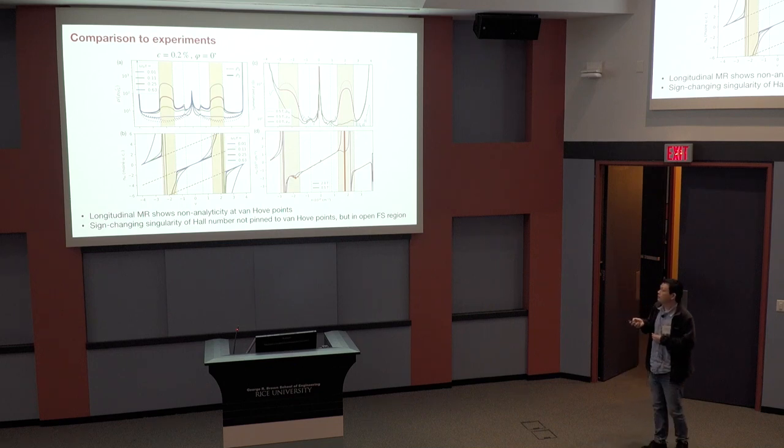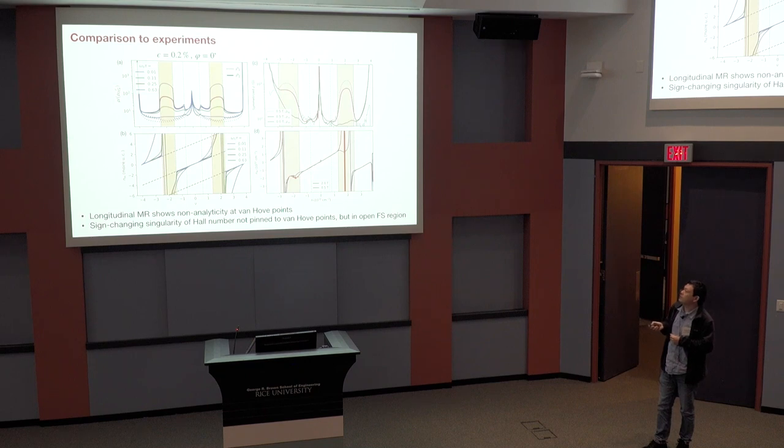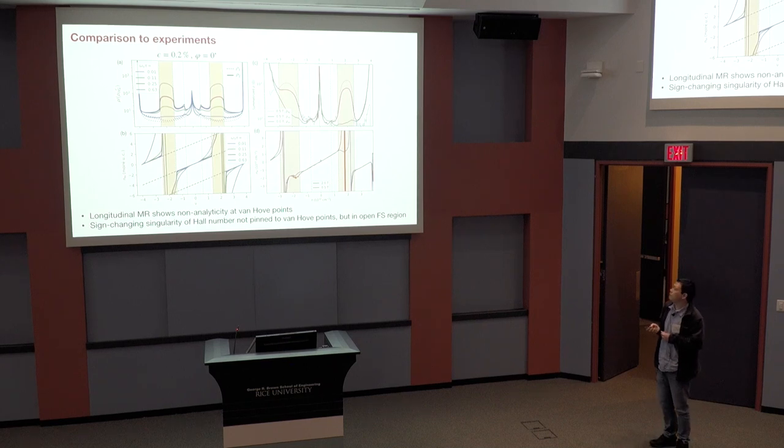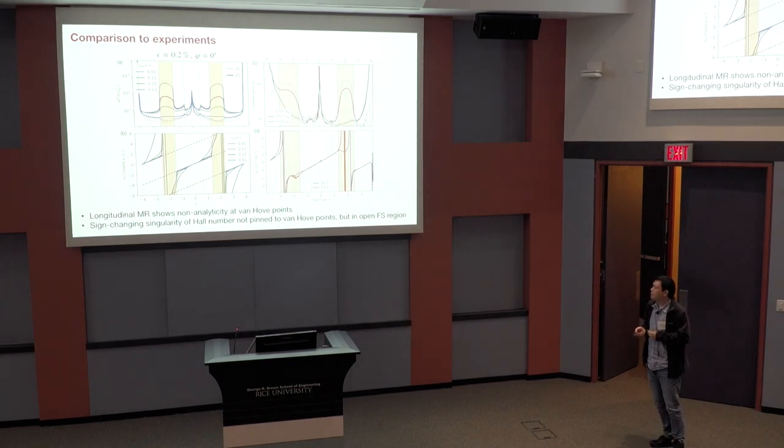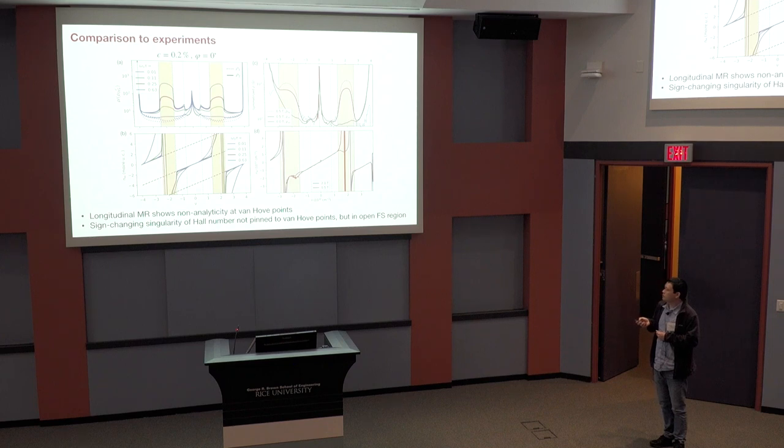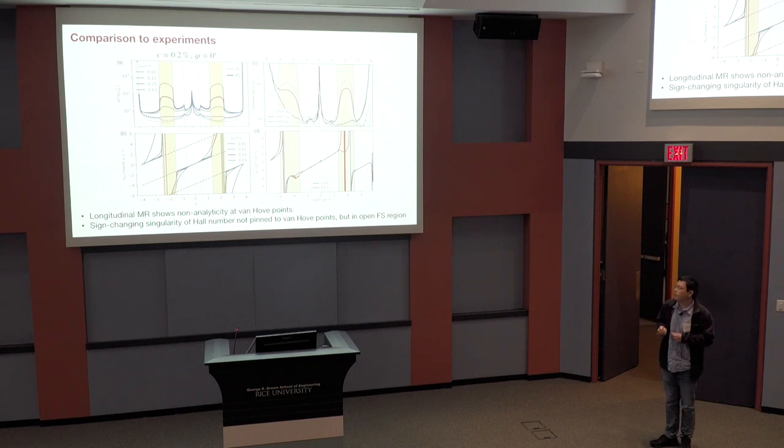And on the other hand, the Hall number doesn't really show much difference compared to unstrained case, in the sense that I still have a sign change once on either side of the filling. And also interesting thing to point out is that the sign changing singularity is not associated with any of the van Hove points. This point was also made in Allan's paper earlier.